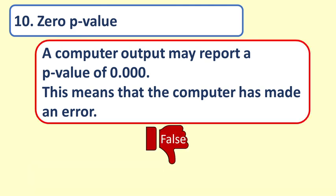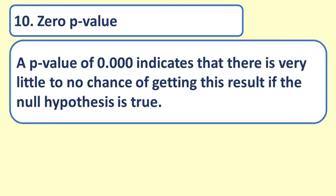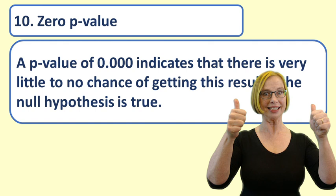And this is false. A p-value of 0.000 indicates that there is very little to no chance of getting this result if the null hypothesis were true. A p-value of 0.000 is often a happy thing for researchers hoping for evidence of effect.